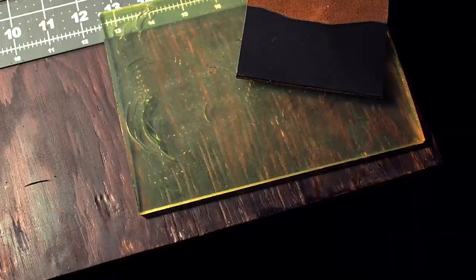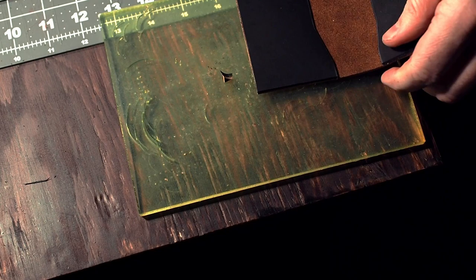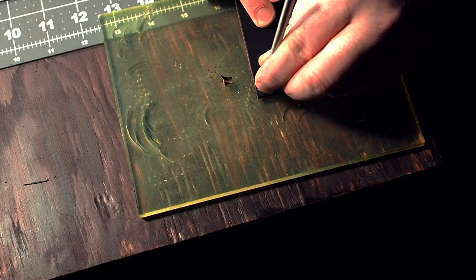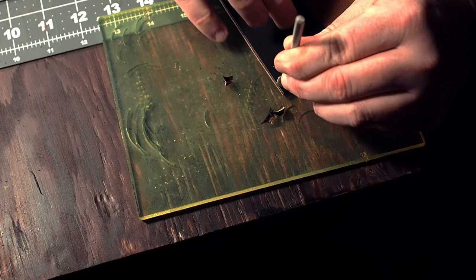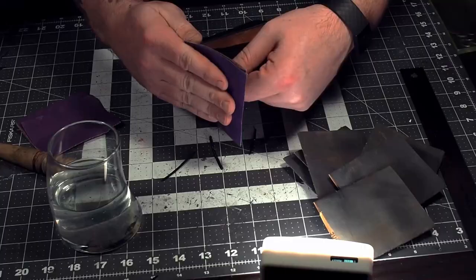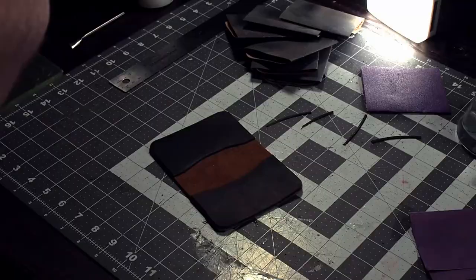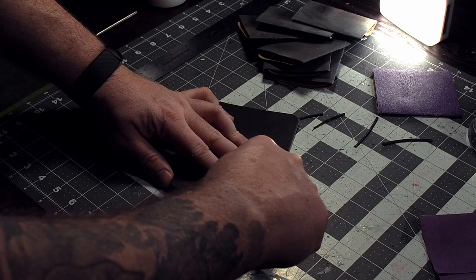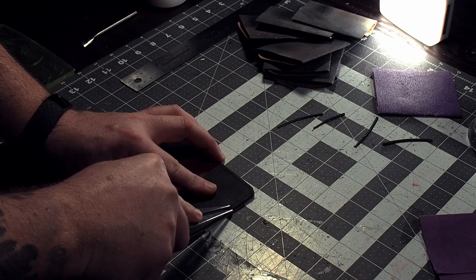Now I'm just going to just take the corners off with my punch here. If you don't have a punch for the corners I used to use a dime and then I would just mark it with my scratch all and then just trim it down with my skiving knife. And I just sanded the corners just so they're nice before I went along with my wing divider here. This is just drawing a line so that I can mark it with my stitching punch.